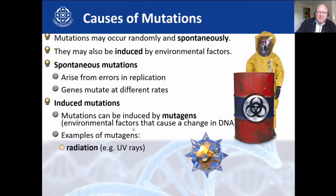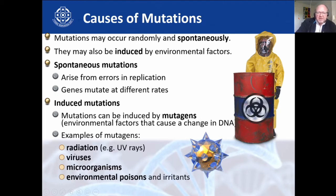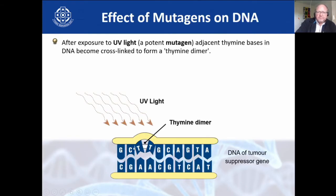Spontaneous mutations arise from errors in replication, and the induced ones are because of mutagens — things like radiation, ionizing radiation, which creates an ion of your DNA by knocking electrons off. Also viruses, microorganisms, environmental poisons and irritants, alcohol, and diet. For instance, UV light, which we need to know about in New Zealand specifically, has an effect on the thymine bases and can sometimes cause them to create a thymine dimer. You don't need to know that detail, but just know that UV light can cause a mutation.